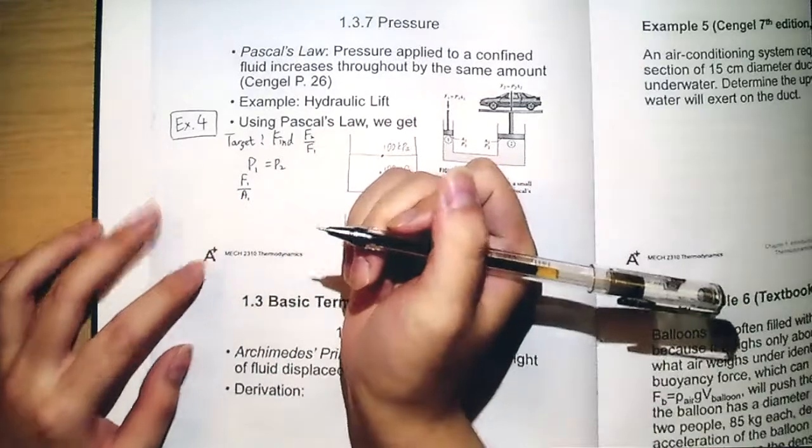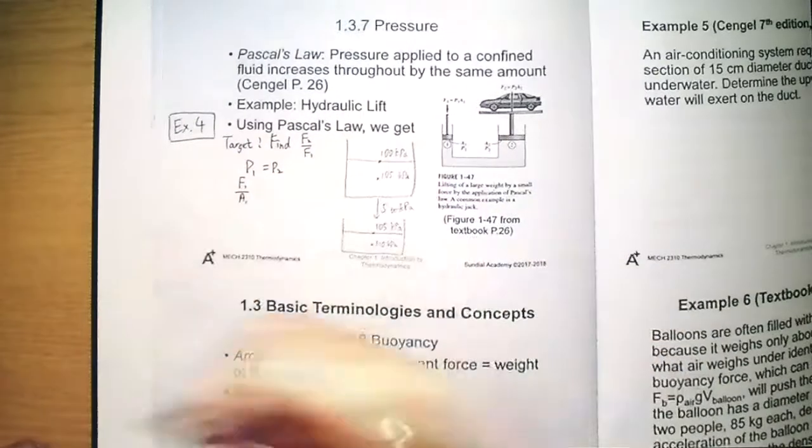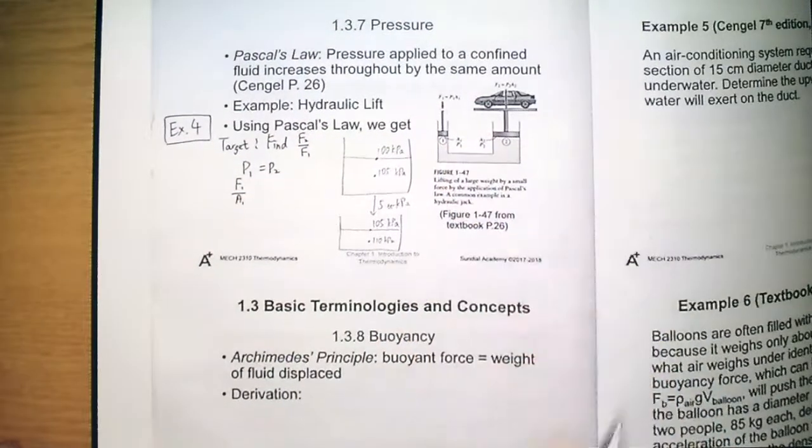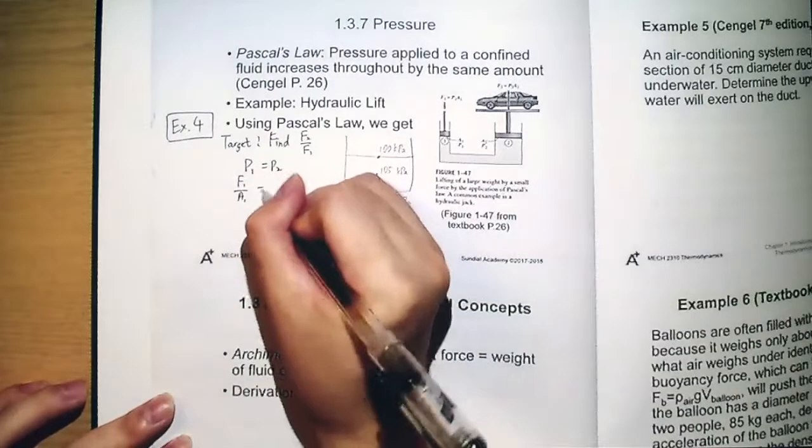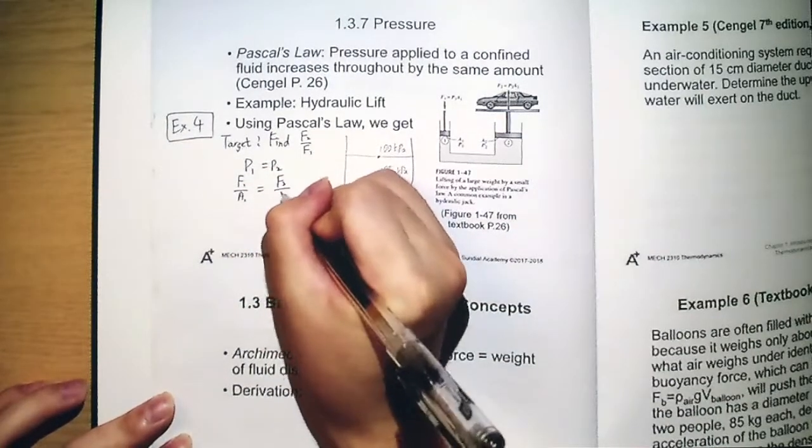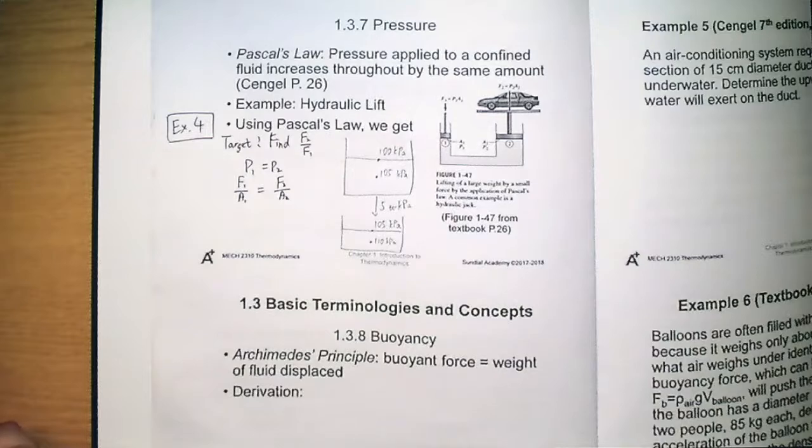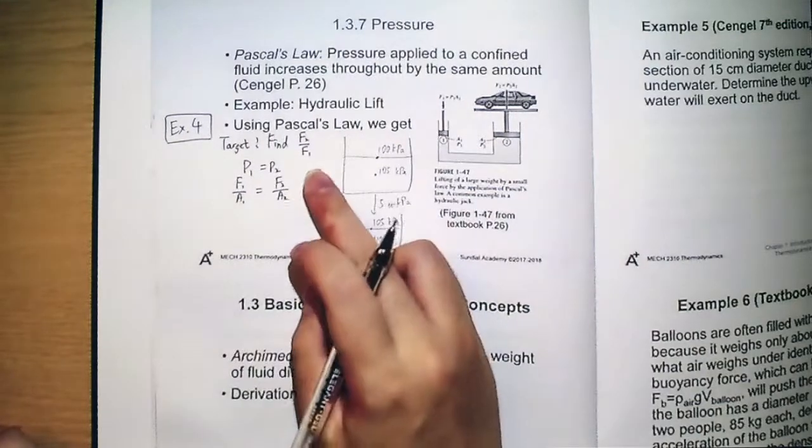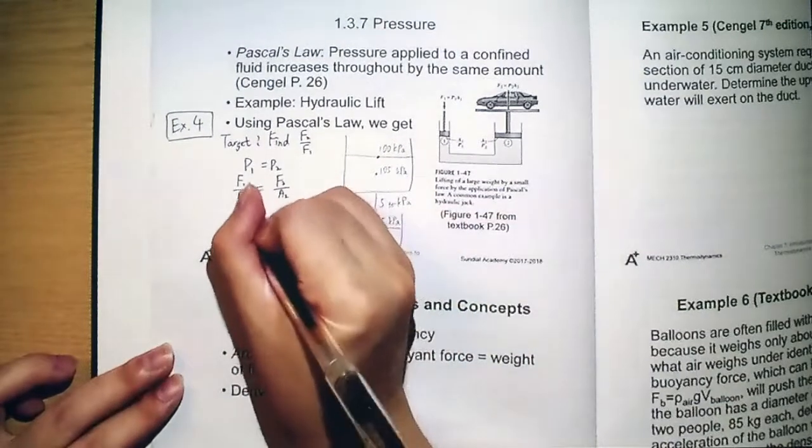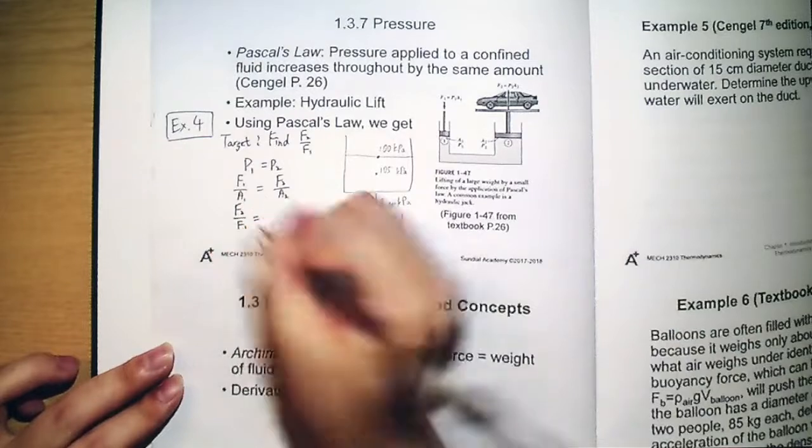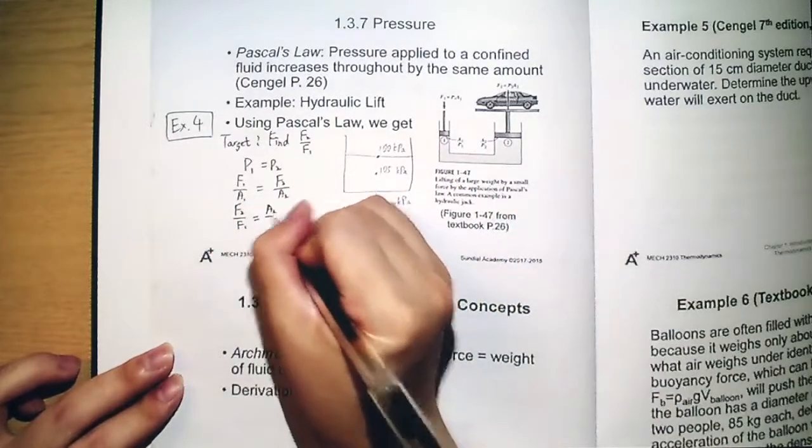Because it's acting on the surface of this fluid, equal to F2 divided by A2. So it's very easy for us to find out this one. That is F2 divided by F1 equal to A2 divided by A1.